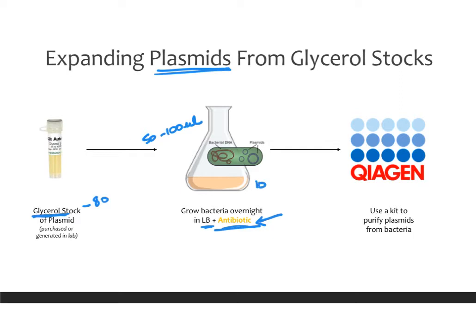You can grow this in whatever volume of LB media you think you'll need. For a few mini preps, maybe 25 or 50 ml. For a midi, 100 ml is a good number, and for a maxi, follow the protocol. We typically use Qiagen kits to do the preps, which is where you purify the plasmids from the bacteria. They come in three sizes. A midi prep is a reasonable choice to generate enough plasmid to keep using long term.